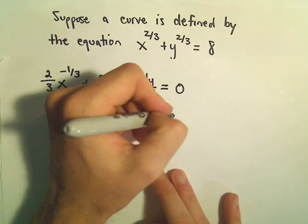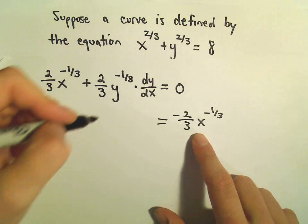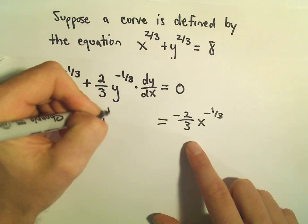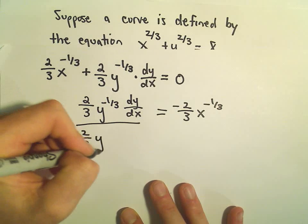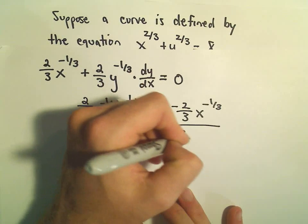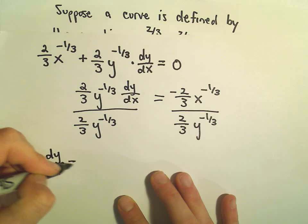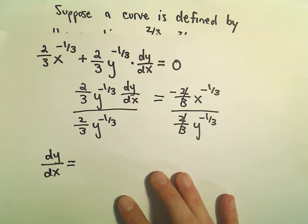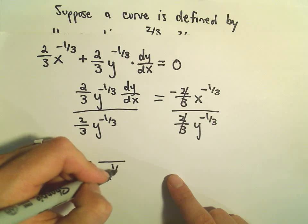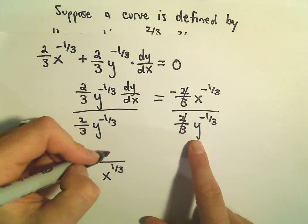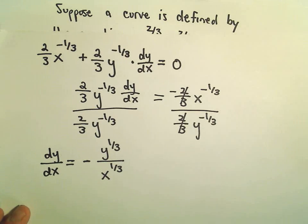So if we want to solve, we can subtract the negative two-thirds x to the negative one-third to the other side. On the left side, we'll still have two-thirds y to the negative one-third times dy/dx. Now we can divide both sides by two-thirds y to the negative one-third. On the left side, we'll be left with dy/dx. The negative two-thirds and positive two-thirds cancel, leaving a negative one. The x to the negative one-third moves to the denominator as x to the positive one-third, and y to the negative one-third comes to the numerator as y to the positive one-third.